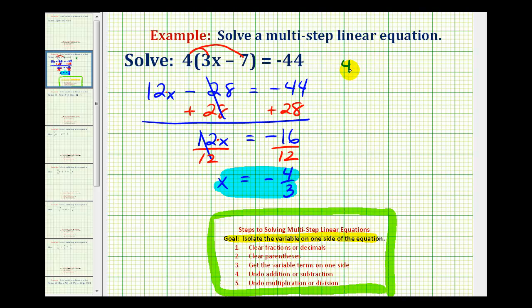We're going to rewrite the given equation, replacing x with negative four-thirds. So we have four times the quantity three times negative four-thirds minus seven equals negative forty-four. So we'll simplify inside the parentheses first.